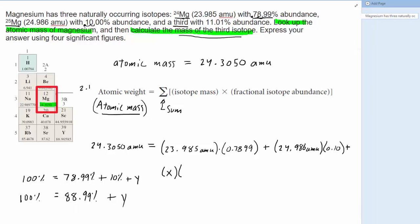And then what we'll do is simply subtract 88.99% from both sides of this equation, and this is going to help us figure out the fractional abundance of the third isotope. And we'll squeeze that in right here, so we're going to get 11.01% is going to be the fractional abundance of the third isotope.